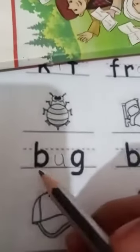What is this? This is bug. B-U-G, bug. B-U-G, bug. What is this? This is bed. B-E-D, bed.